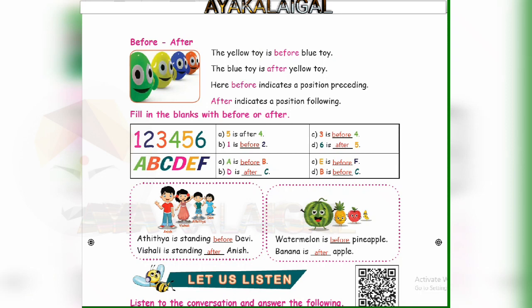Alphabet section: A is dashed B — A comes before B. D is dashed C — D is after C. E is dashed F — E is before F. B is dashed C — B is before C. A is standing before D in the line. Four children are in a line — A is standing before D.